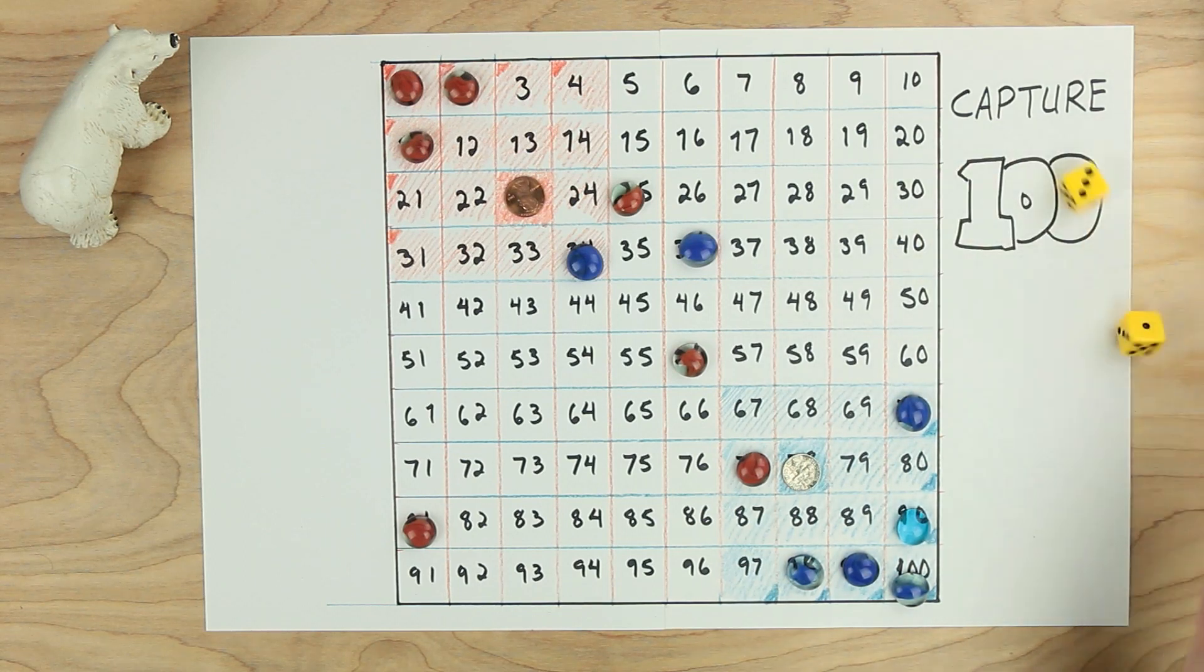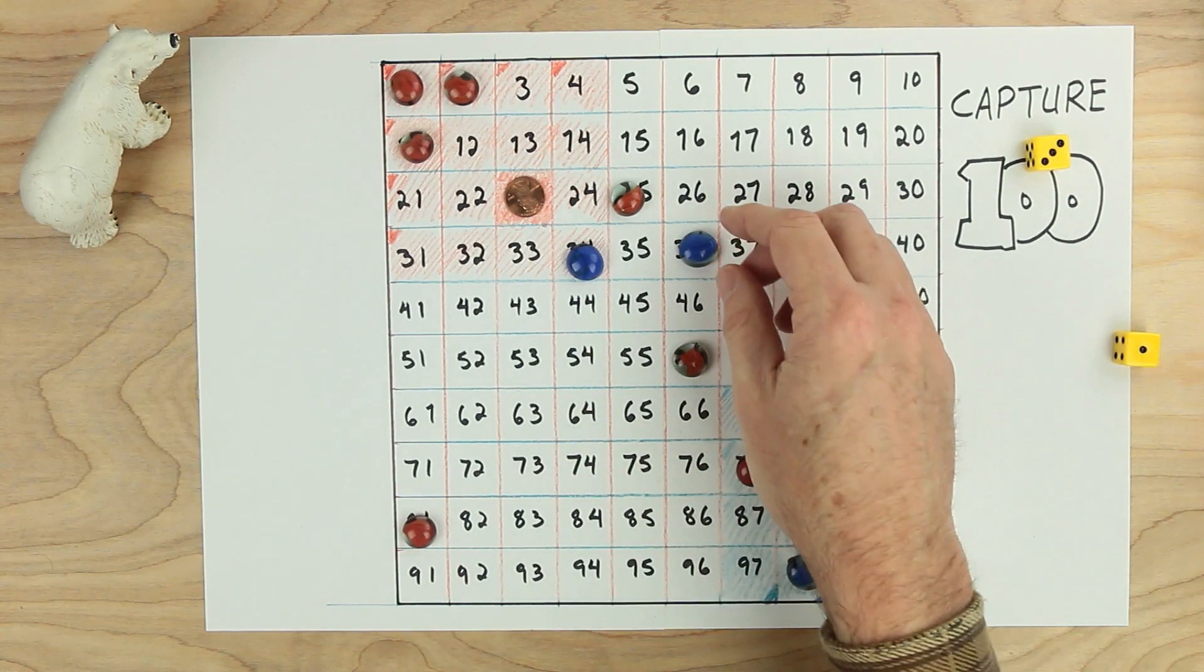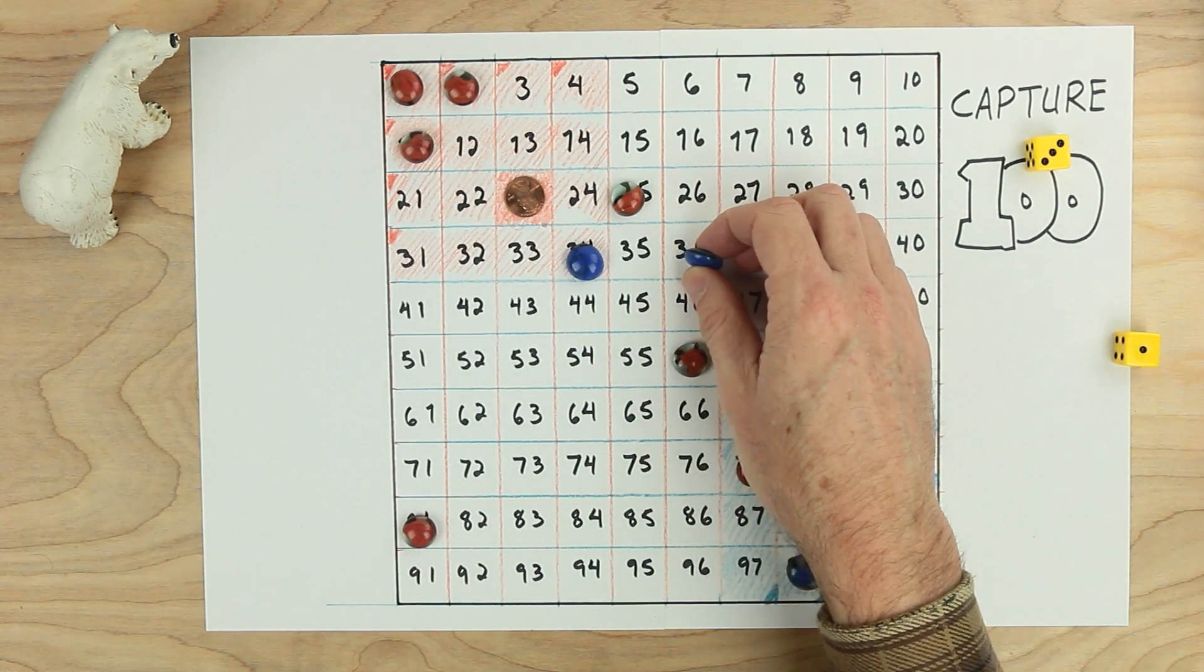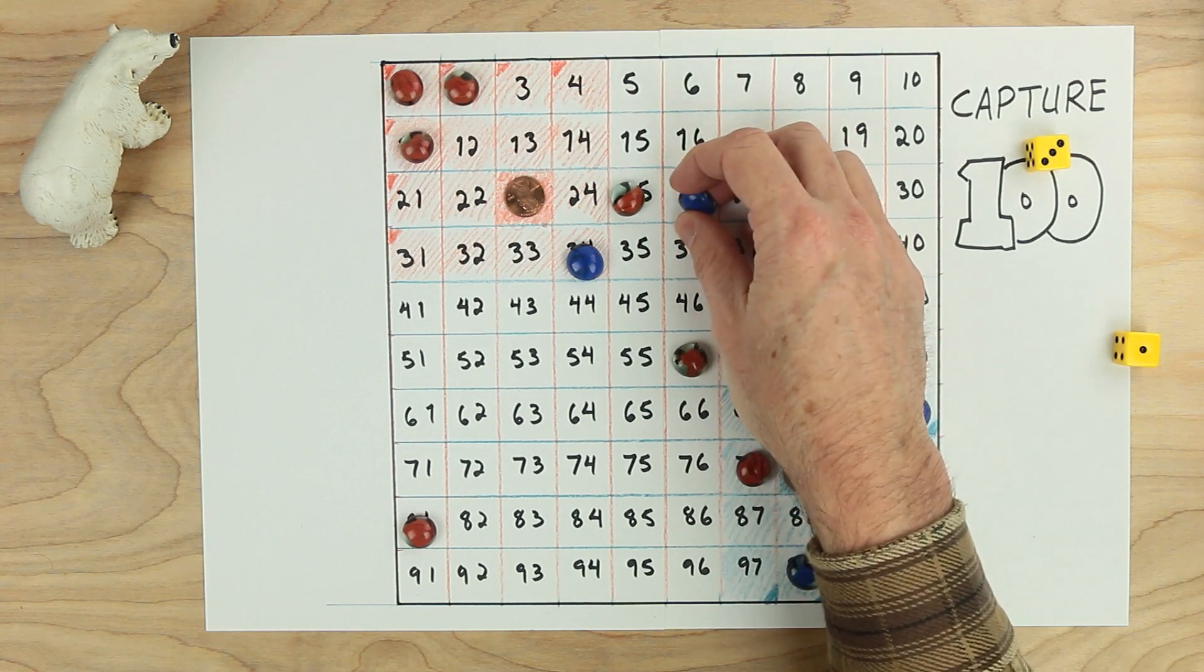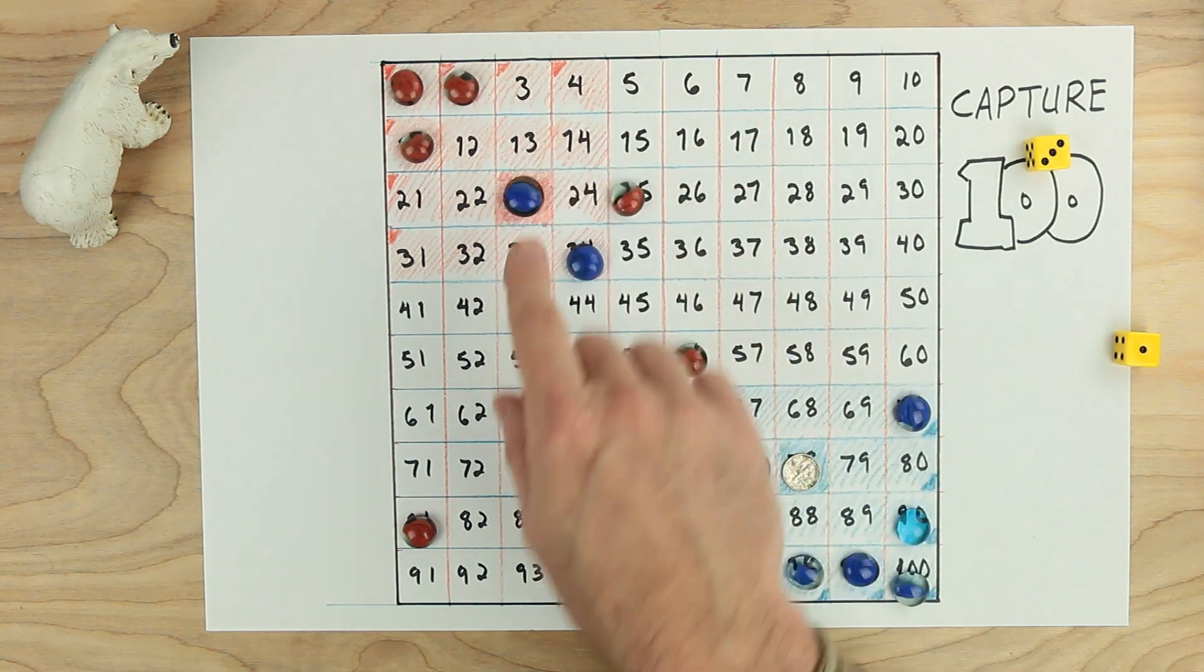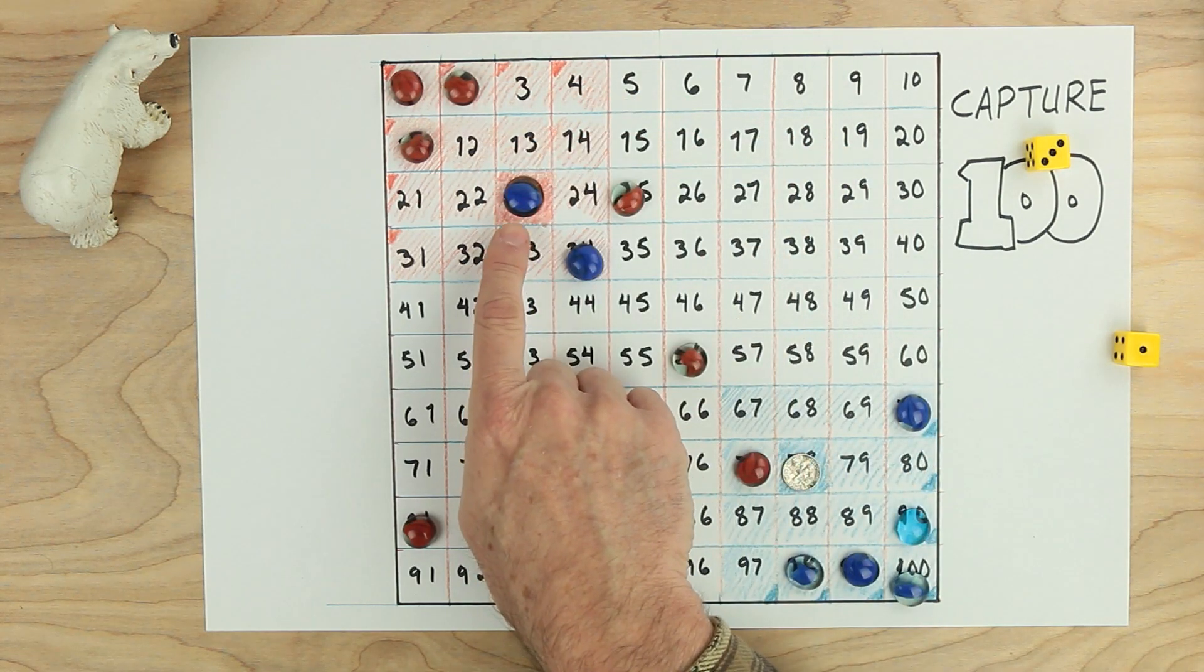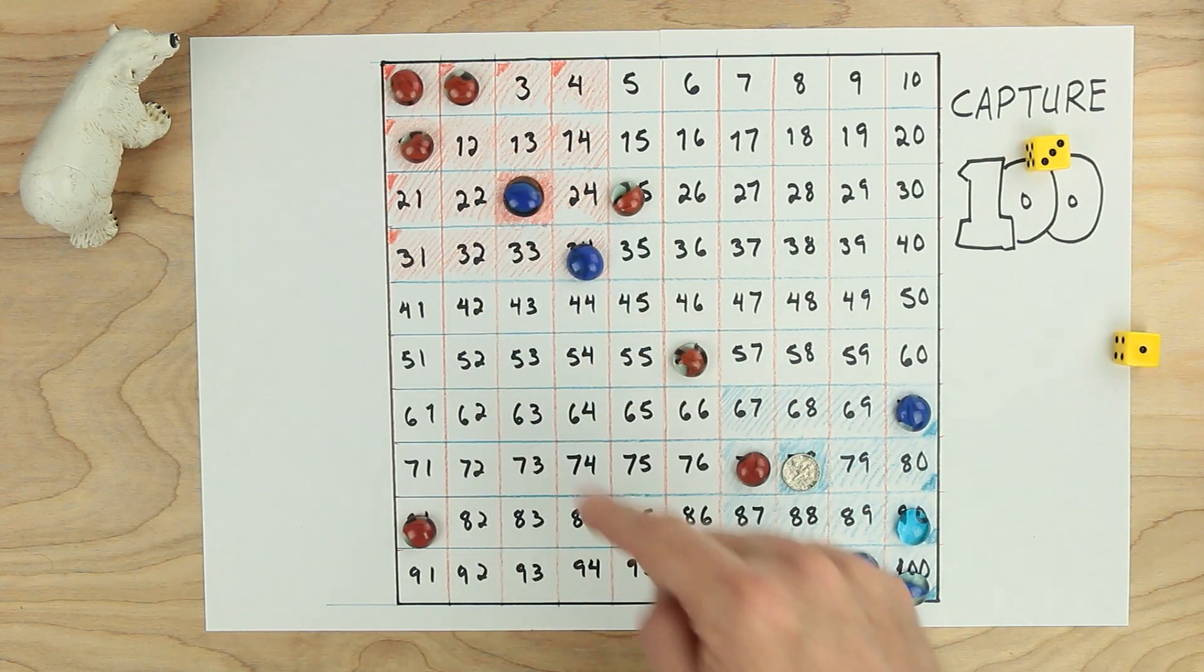Blue's turn. Blue rolls a one and a three. So blue decides to go minus one ten to twenty-six and minus three ones, one, two, three, and takes the coin. Now wherever blue travels now, blue will carry that coin, unless red knocks it off. And then blue will have to come back home.